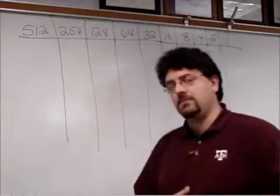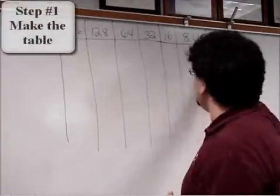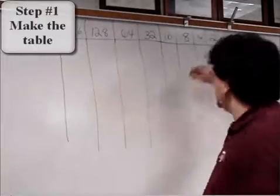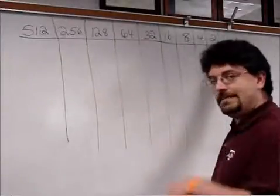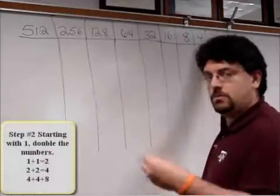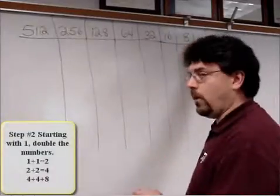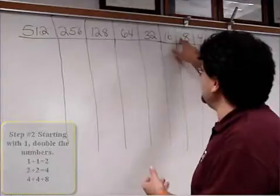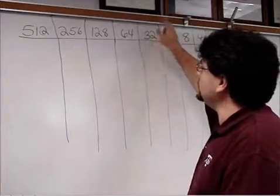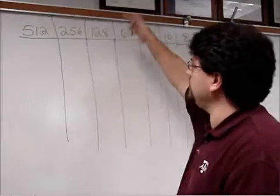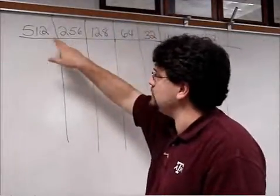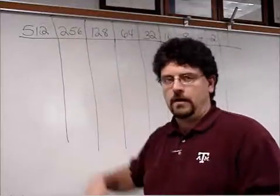The first thing you have to do is create your table. You start with your numbers up top, and then you draw your little lines down. We start with the number 1, and then we double it. So 1 plus 1 is 2, double 2, 2 plus 2 is 4, 4 plus 4 is 8, 8 plus 8 is 16, 16 plus 16 is 32, 32 plus 32 is 64, 64 doubled is 128, 128 plus 128 is 256, and 256 plus 256 is 512.